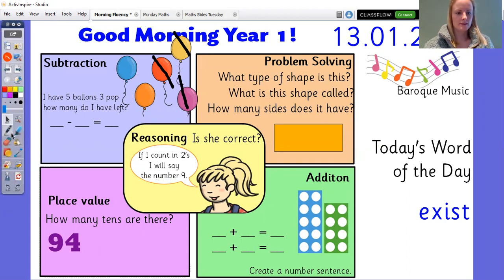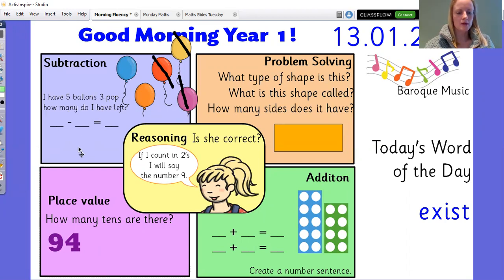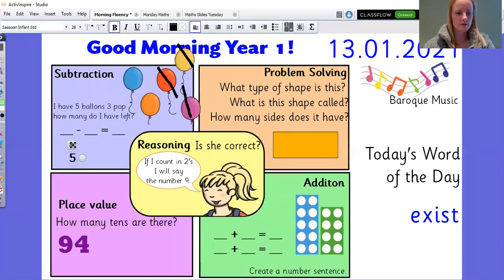Okie dokie. So it says here, I have five balloons, three pop, how many do I have left? So I've got five minus three equals how many balloons? How many balloons are left? Correct. Two.